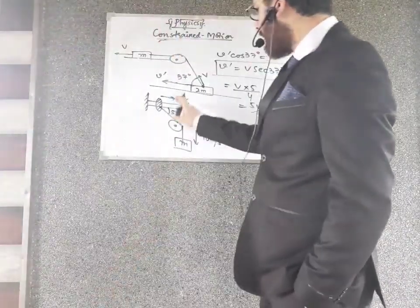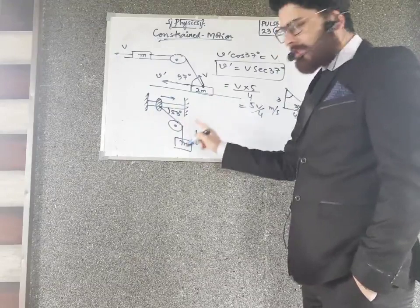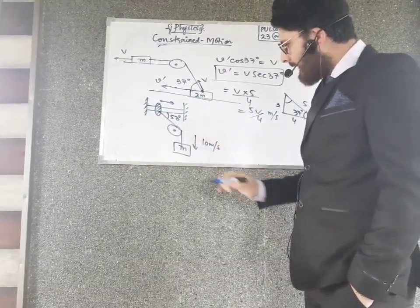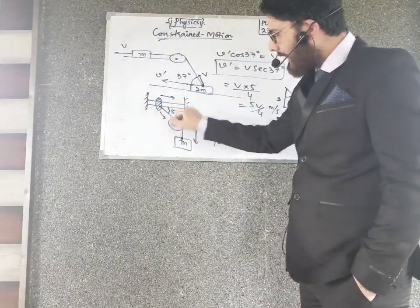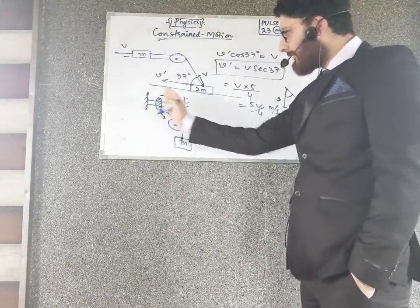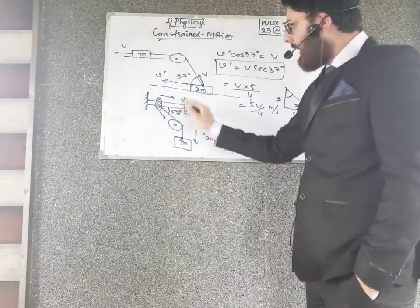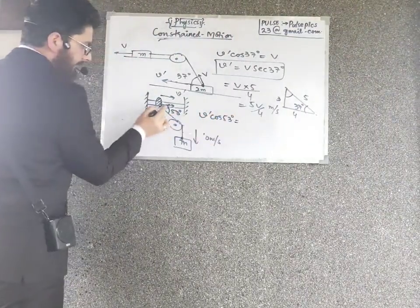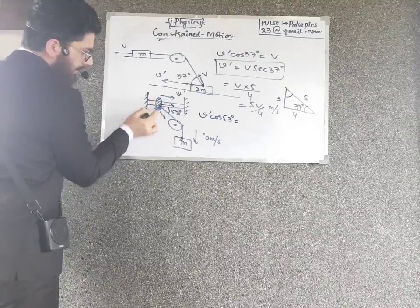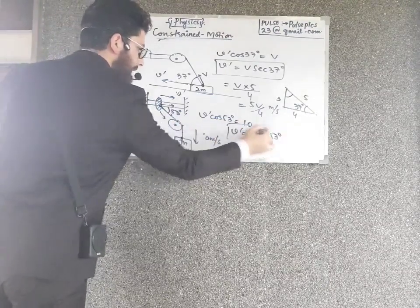You have to determine the velocity of the collar. The collar is slidable along the rod. The velocity of the collar is V-dash, which is along the rod. The component of V-dash along the string is V-dash cos 53. Since the velocity along the string must equal the velocity of the block, V-dash cos 53 equals 10. Therefore the answer is 10 divided by cos 53. Very easy.